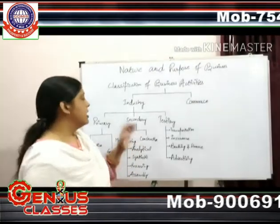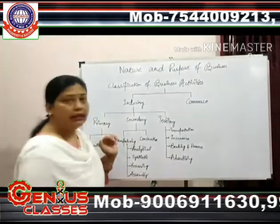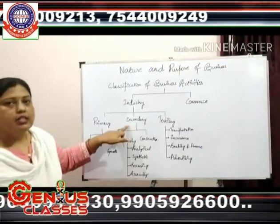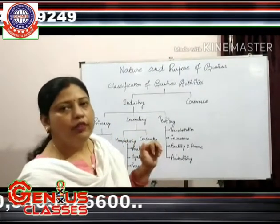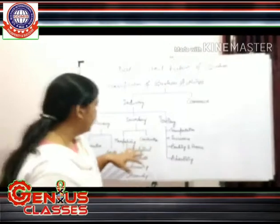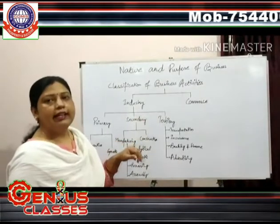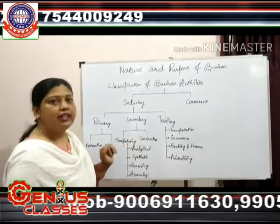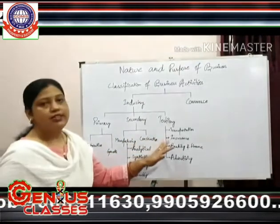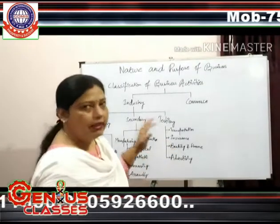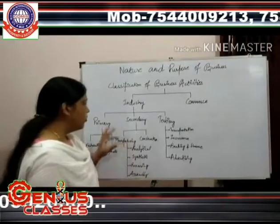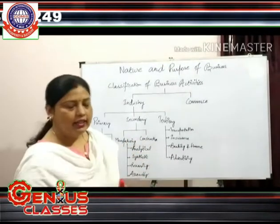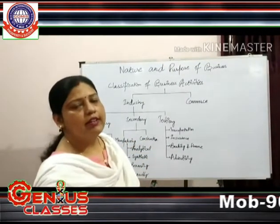When we talk about secondary industry, secondary industry covers the whole manufacturing process. We are going to use raw materials for the production of finished goods. We are processing raw materials into finished goods.